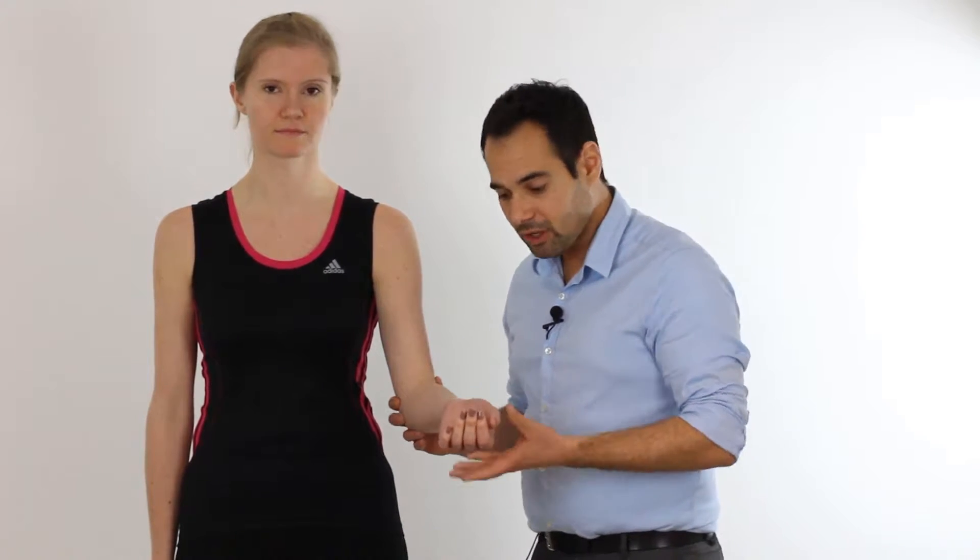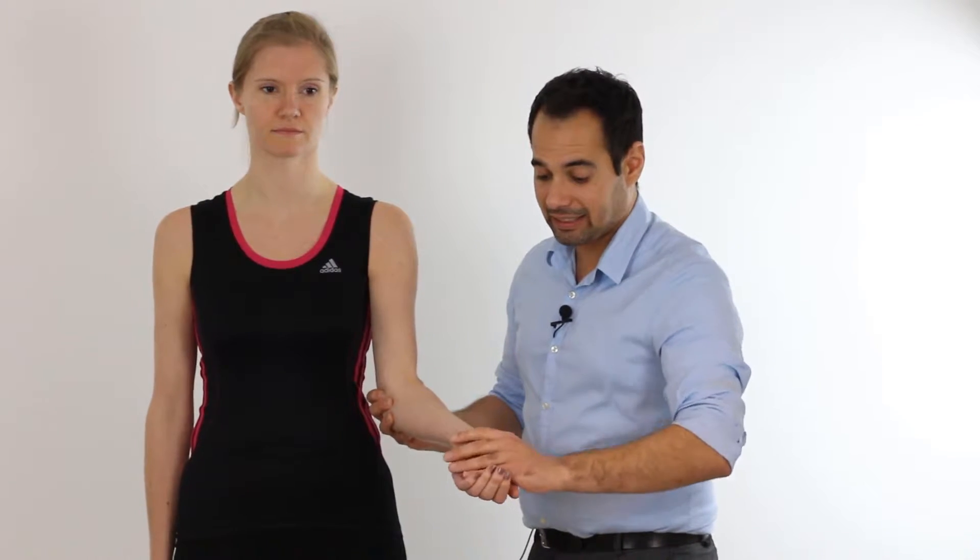So how do we do this test? We start with our patient's elbow in a flexed position. We then passively fully supinate the forearm, before we passively extend the wrist and then passively extend the elbow. We hold this position for approximately five seconds and see what happens.